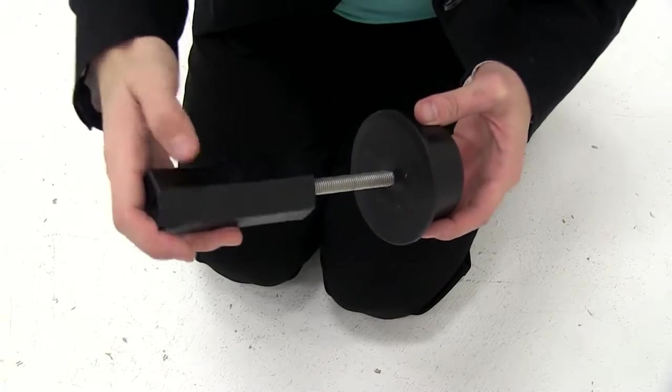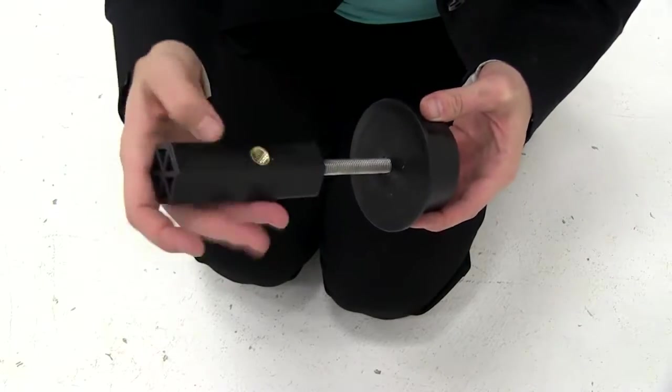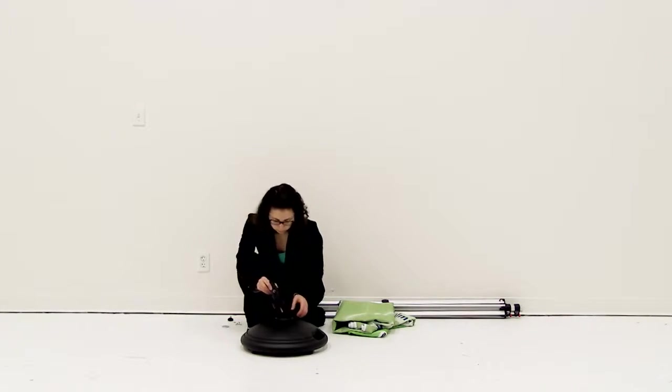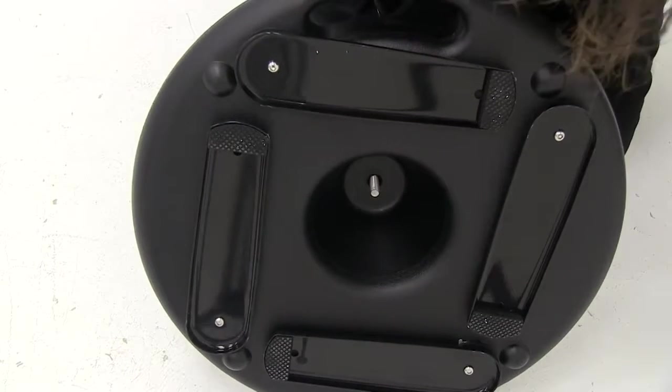Next, screw the base screw completely into the post support. Place the post support into the top of the base and flip over.